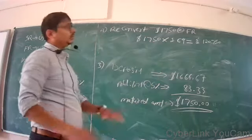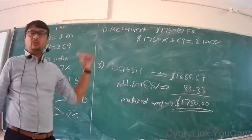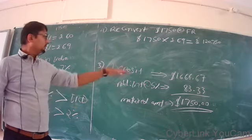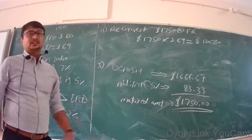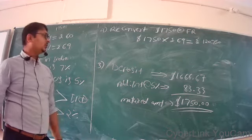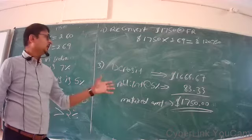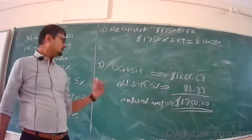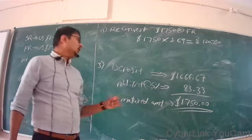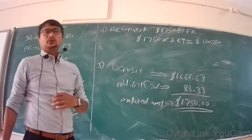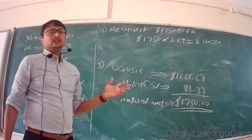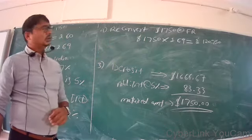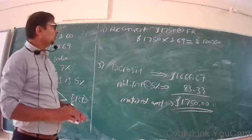Rs. 1,20,750 is what you have earned by borrowing Rs. 1,00,000 in India, converting it into dollars, and depositing 1,666.67 dollars in the US bank. You received interest of $83.33 at the 5% rate offered by the US bank, so the matured sum from your deposit is $1,750, reconverted to Rs. 1,20,750.